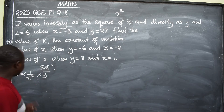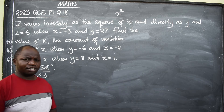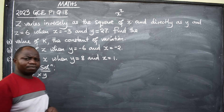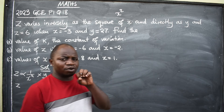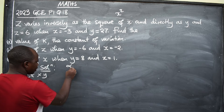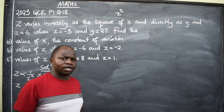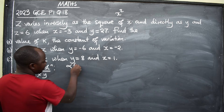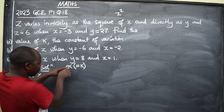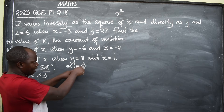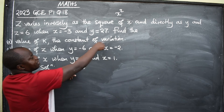The next step is to get rid of the variation symbol. The variation symbol produces two things: an equals sign and K. So wherever you see the proportionality symbol, replace it with equals and K, where K is the constant of variation.